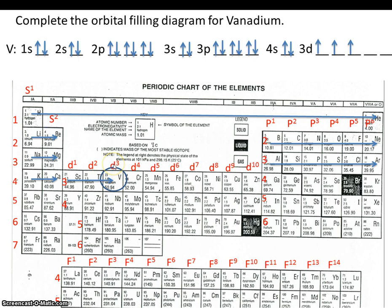In the previous slide, we mentioned that we do it the same way, except we start at the preceding noble gas. Preceding means to come before, and the noble gases are helium, neon, argon, krypton, xenon, and radon. So vanadium is number 23.